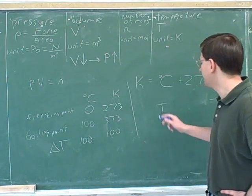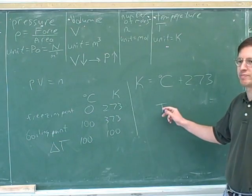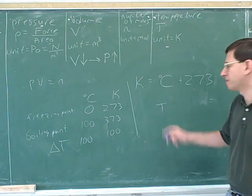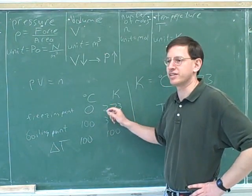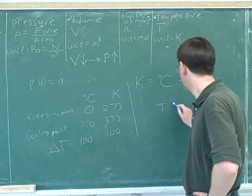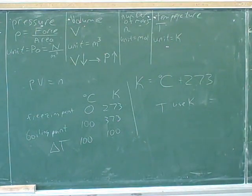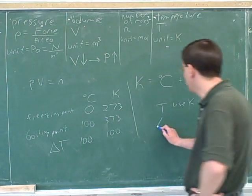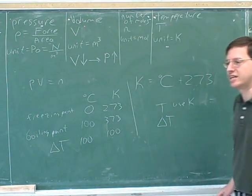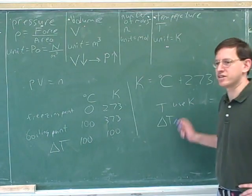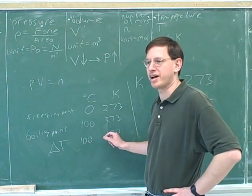So if the formula has a T in it, this is the level of temperature, and then you have to use Celsius and Kelvin. But if the formula has a delta T in it, well, it doesn't matter whether you use Celsius or Kelvins, because we just saw you get the same number either way.